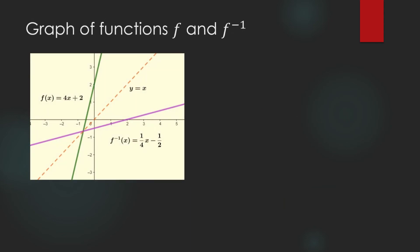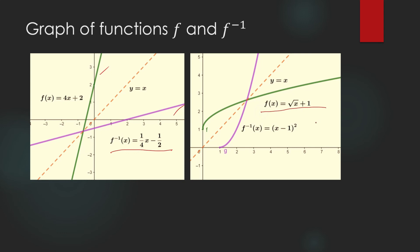The graph of a one-to-one function and its inverse appear nicely when sketched on the same xy plane — there is a symmetry between them. For example, f(x) = 4x + 2 has a graph that is a line, and its inverse f⁻¹(x) = (1/4)x − 1/2 has its own graph. Similarly, f(x) = √(x+1) is one-to-one, and its inverse function equals √(x−1). The graphs of a function and its inverse show clear symmetry on the same xy plane.